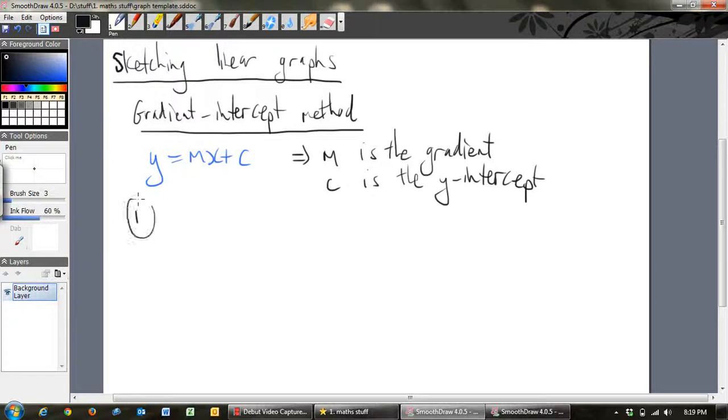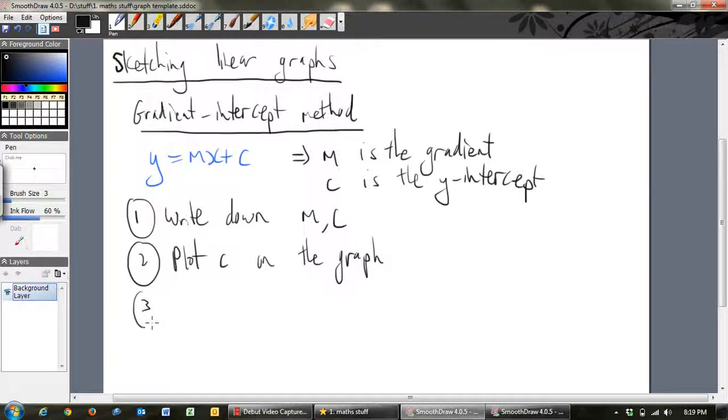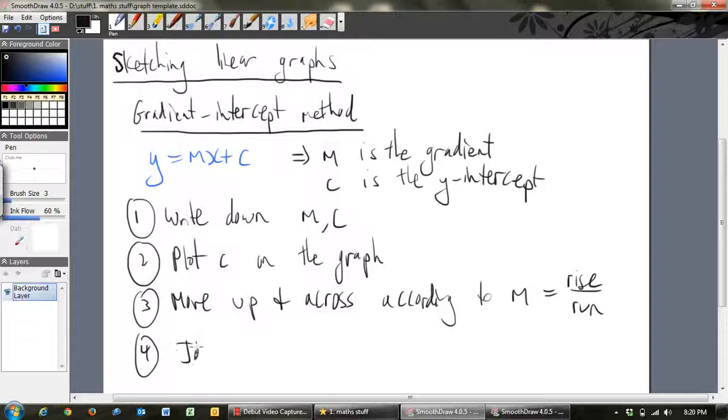So basically the steps are, firstly, write down m and c. Write them down, make sure you know it. Okay, then I would plot c on the graph. From there, I would move up and across according to m, which remember m is rise over run, and then join the dots.